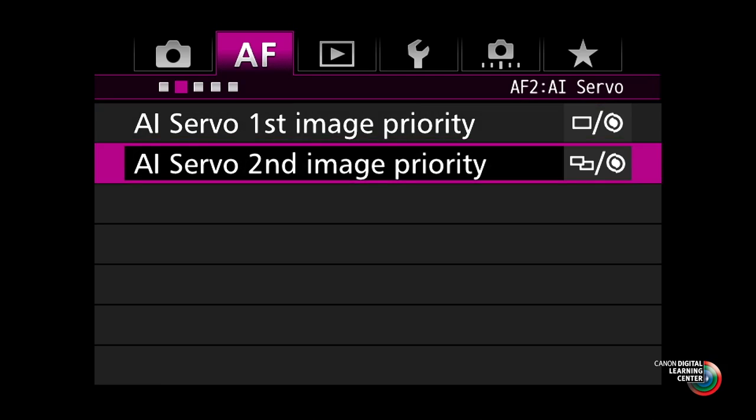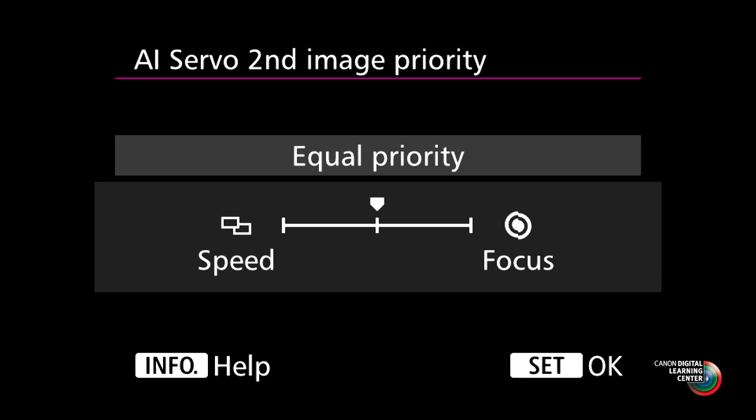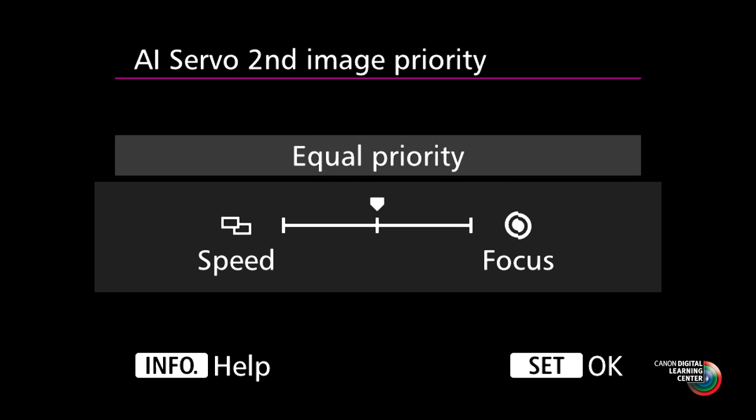AI Servo Second Image Priority takes place for the second shot in a sequence and beyond. If you're shooting with continuous drive, from the second shot onwards, do you want the system to fire at the fastest possible frames per second rate even if the autofocusing system isn't confident it has sharpest possible focus? Or do you want to tell the system you want the maximum number of sharp shots, even if that means slowing the frames per second rate down a little to accommodate inconsistent movement or a subject without a lot of detail? These are two additional important settings in AI Servo AF that you may want to consider.